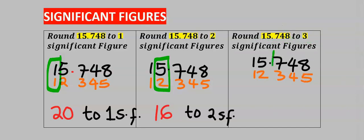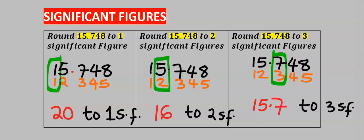The 3rd significant figure is 7 and the first two figures are 15. However, 4 cannot modify 7, so 7 will remain and you have 15.7 to 3 significant figures.